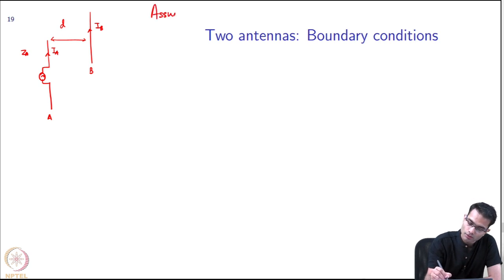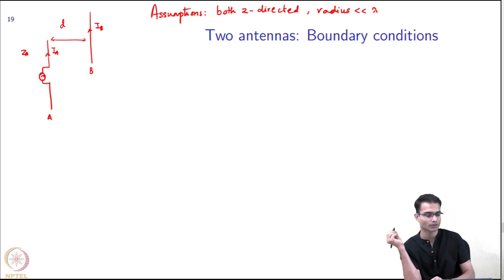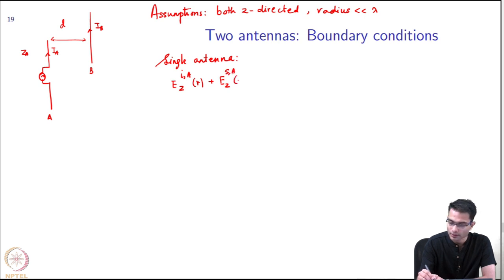Since this is the very first introduction of CEM to mutual coupling, I need to make some simplifying assumptions which is not required, but just to keep the derivation simple. The assumptions I will make are: both are Z directed, both currents are Z directed, and radius is much smaller than wavelength. This just allows the math to become a little bit easier.